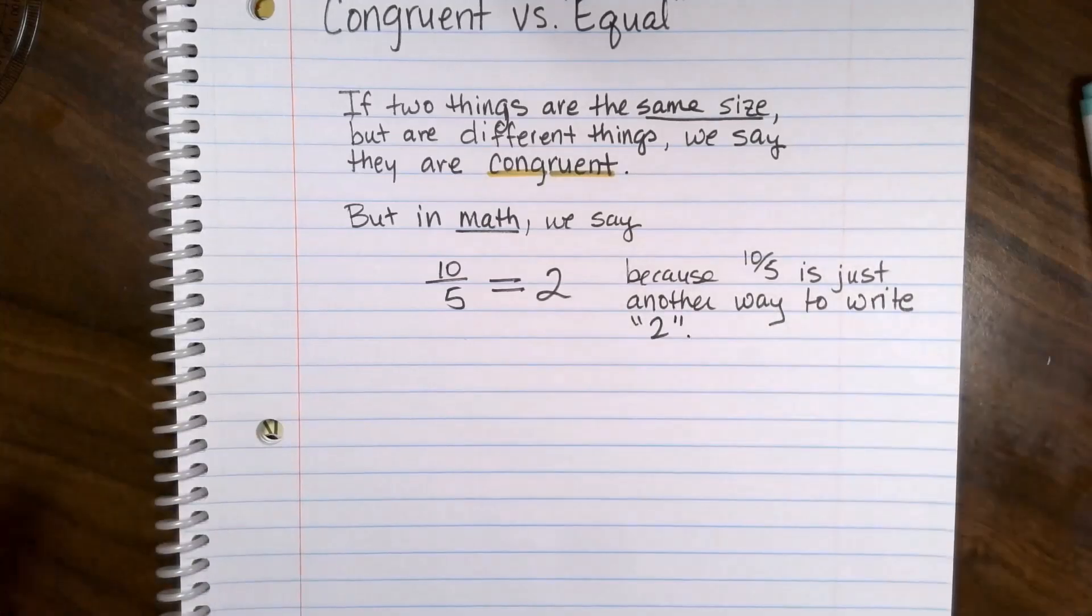They are actually the same thing. Ten over five is two. It's not like having two different shirts. They are the same thing.